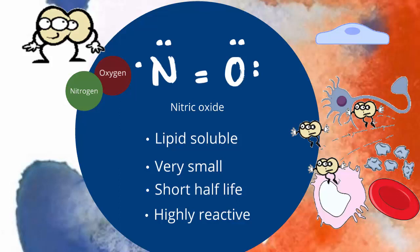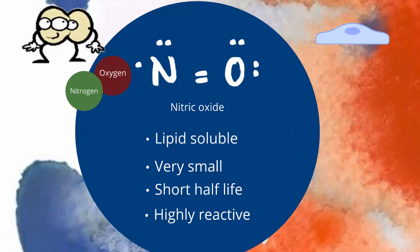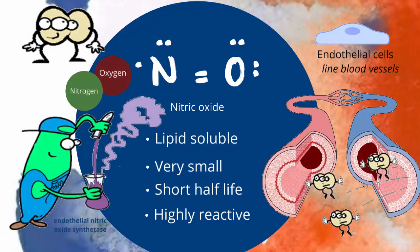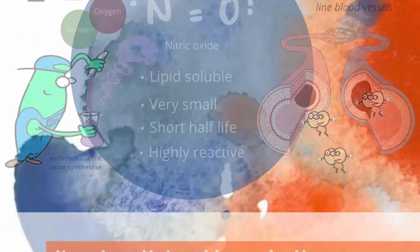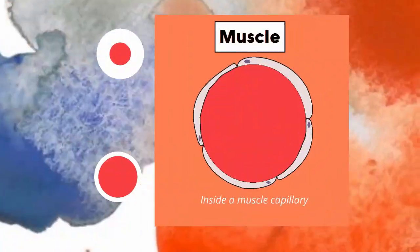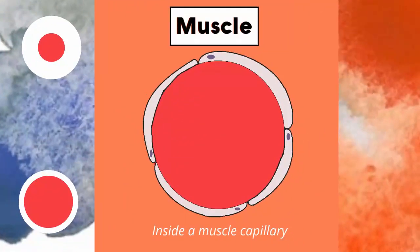The nitric oxide that is AWOL in someone who is insulin resistant is the nitric oxide produced by endothelial cells. These are the cells that line the blood vessels — big ones and little ones. The endothelial cells produce nitric oxide with the help of an enzyme called endothelial nitric oxide synthetase, or ENOS for short. This nitric oxide signals to the muscle cells surrounding the blood vessels to relax. This process of relaxing is called vasodilation.